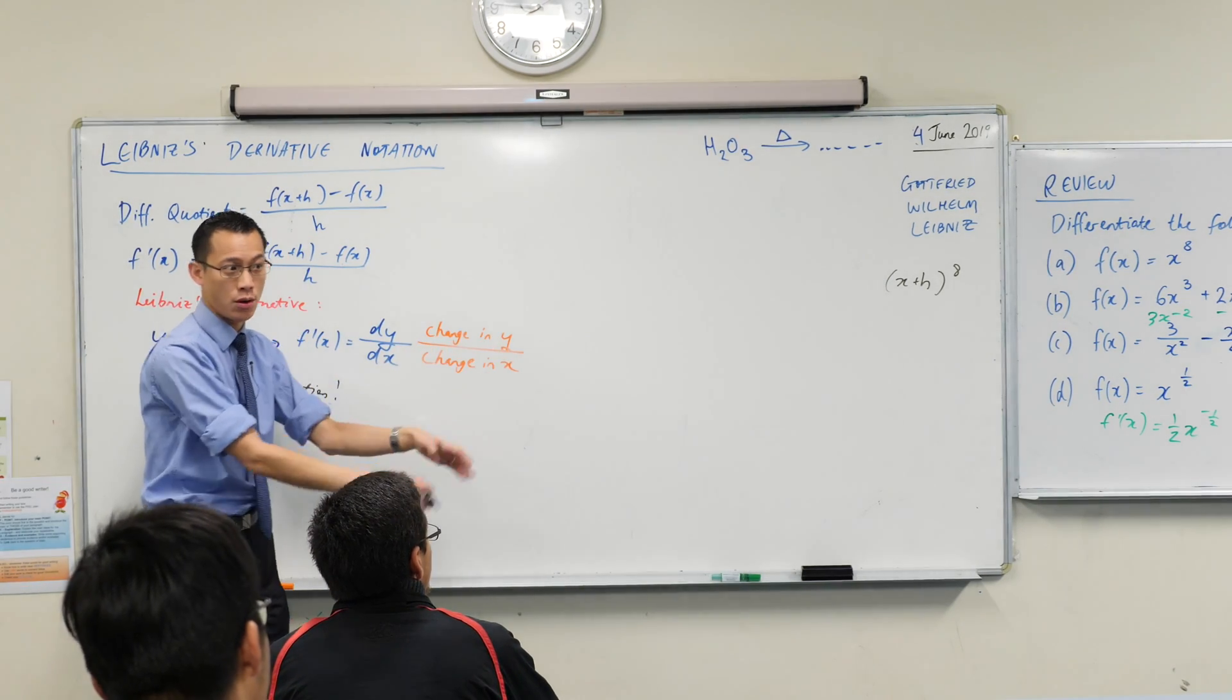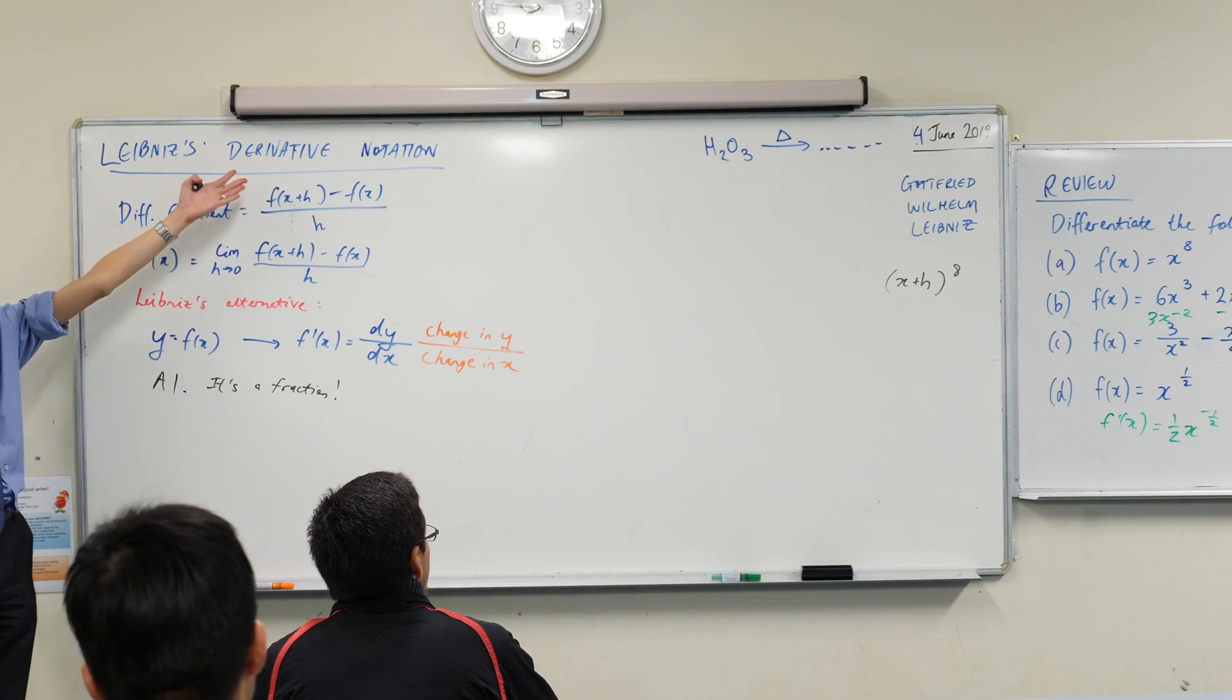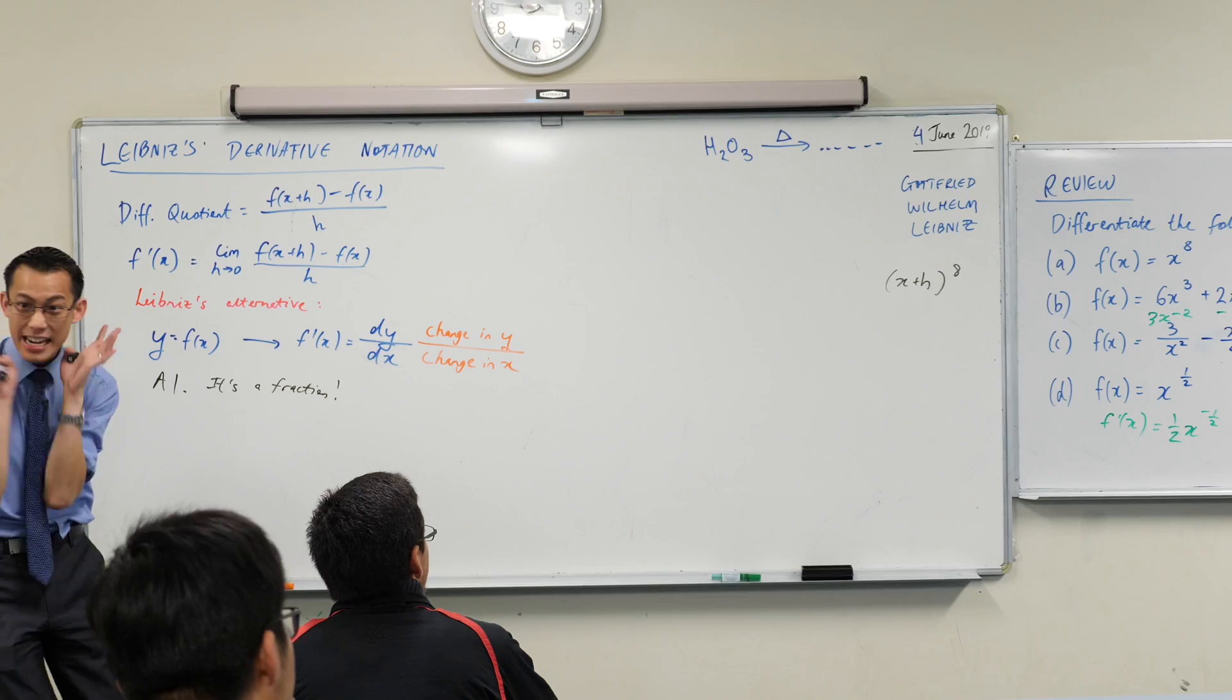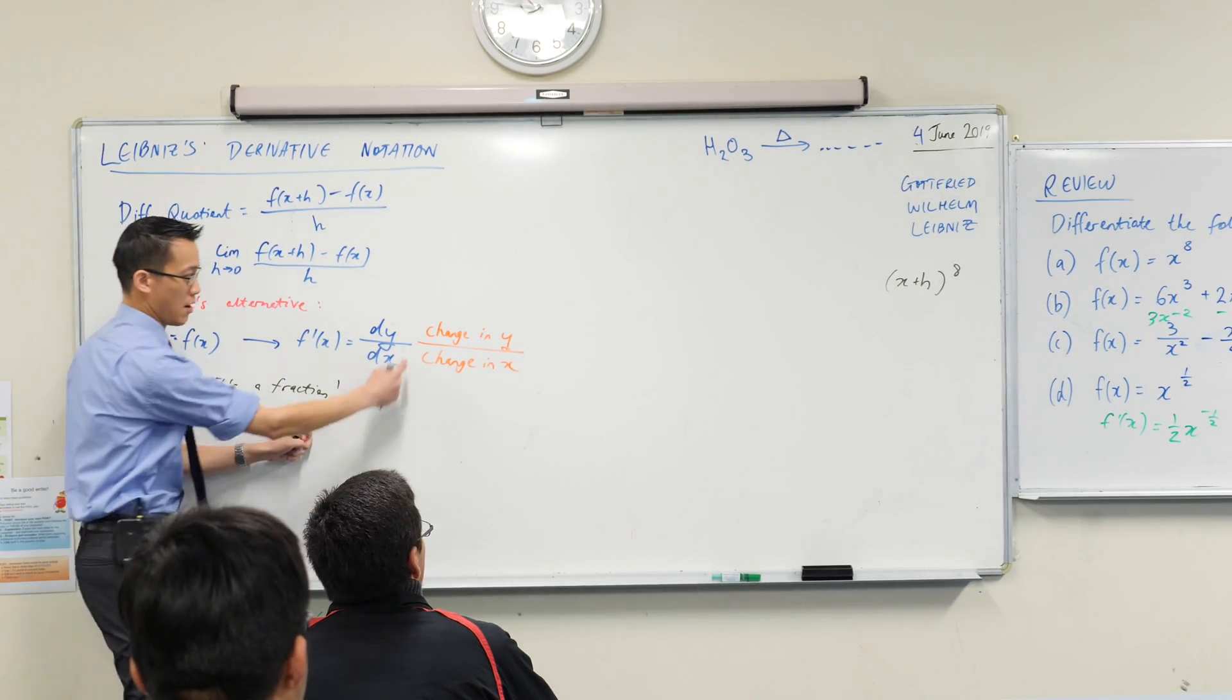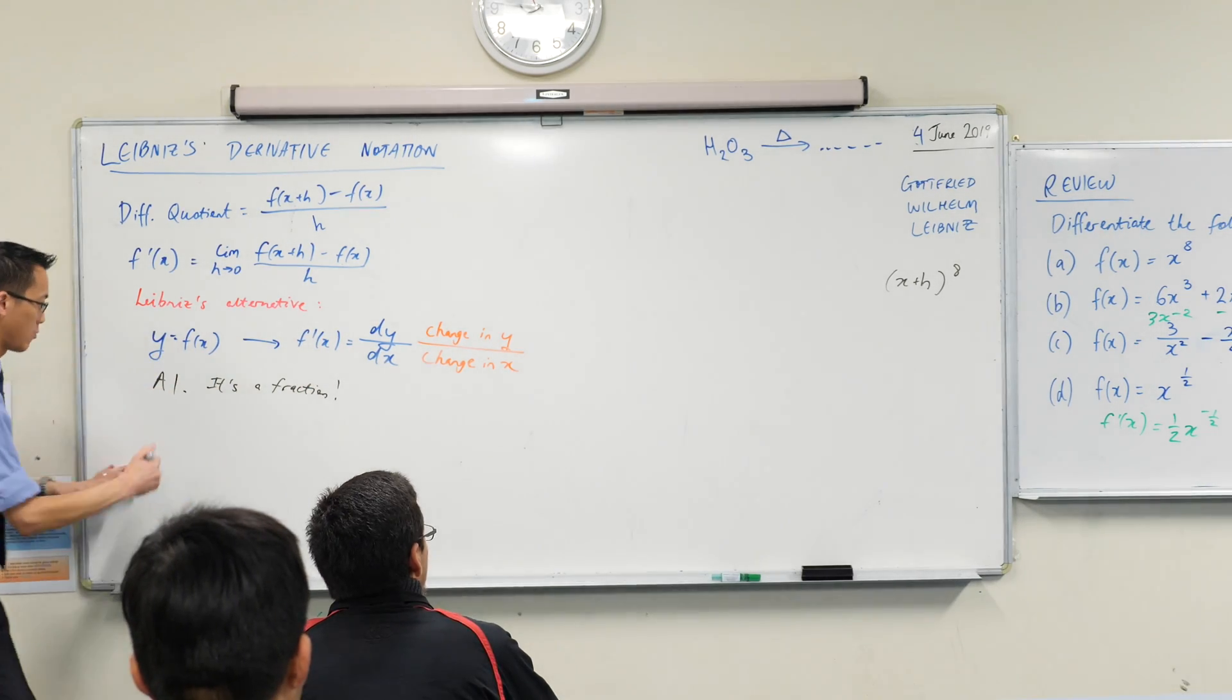So, we've automated this process. We don't have to go through first principles anymore, but we want you to remember that's actually what's going on underneath. Whenever you do an x to the seven, whenever you differentiate anything in the future, this is what's really going on. Rise over run, rise over run, change in y, change in x. That's advantage number one.